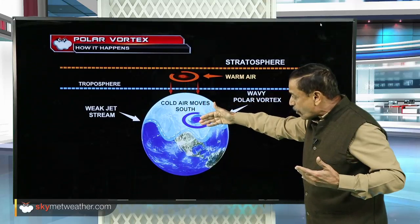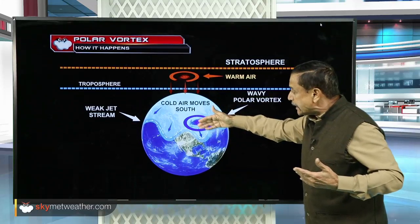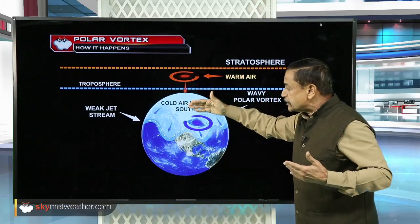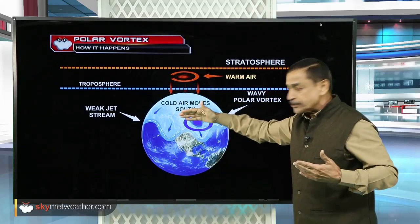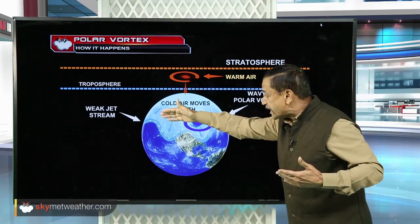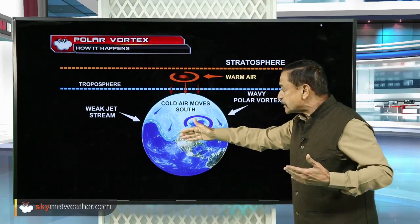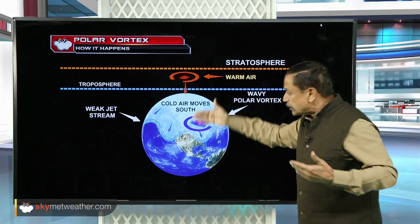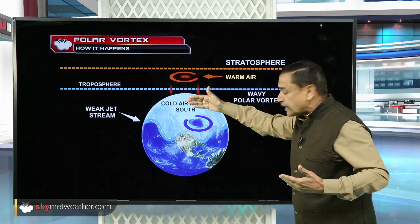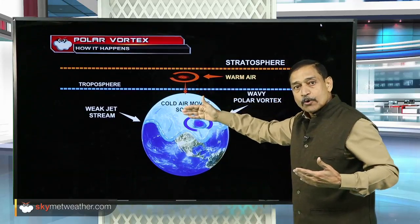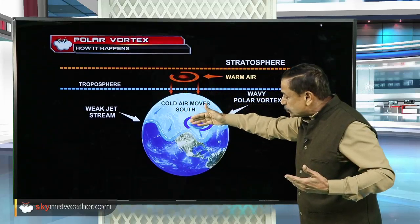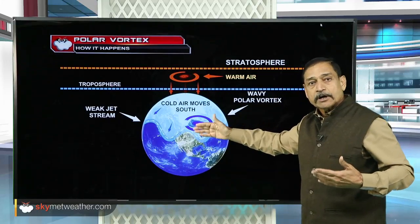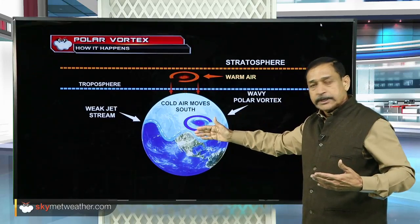It comes down to the lower latitudes. And the jet stream, which was very, very stable and very straight, also meanders — it takes a wavy shape. It develops some kinks, and through those cracks and openings, the extremely cold air travels to the lower latitudes. This is what causes the Arctic blast.